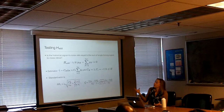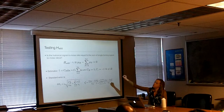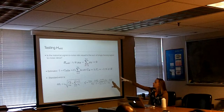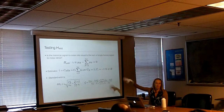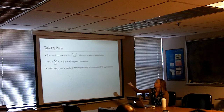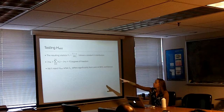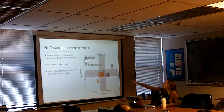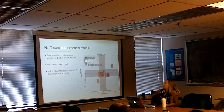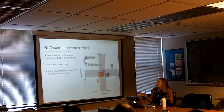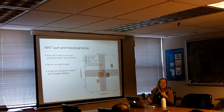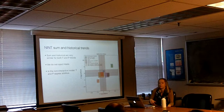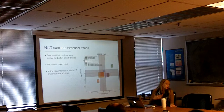Now we test H-additive: is the historical signal-to-noise ratio equal to the sum of the single-forcing signal-to-noise ratios? We get an estimator from the ensembles with the standard error from the pooled standard deviation. The resulting statistic follows the Student T distribution, which we can use to reject H-additive when the statistic differs significantly from zero at 99% confidence. For the NINT case, the sum and the historical are very similar for both temperature and precipitation trends; their 99% confidence intervals overlap a lot. We cannot reject H-additive: the response to the sum of forcings appears equal to the sum of the responses, so temperature and precipitation trends appear additive in the non-interactive chemistry model.